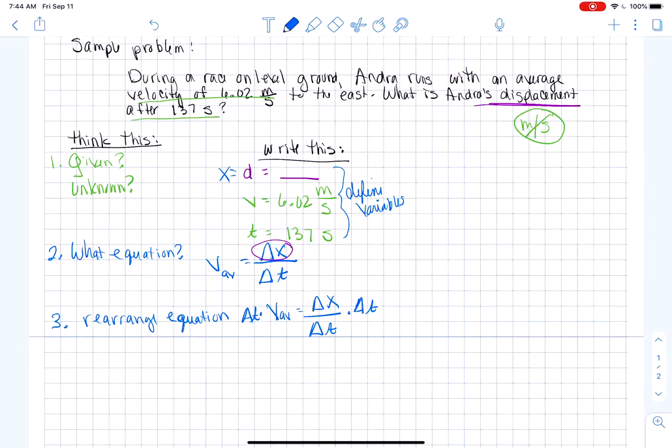And you'll say vav equals delta x over delta t. We're looking for the delta x, so you're going to multiply both sides by delta t. And when you then cancel those out, the delta t's, you'll find that the equation that you want to use is actually delta t times average velocity. And that's going to equal delta x.